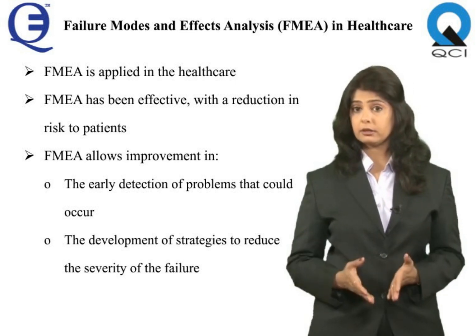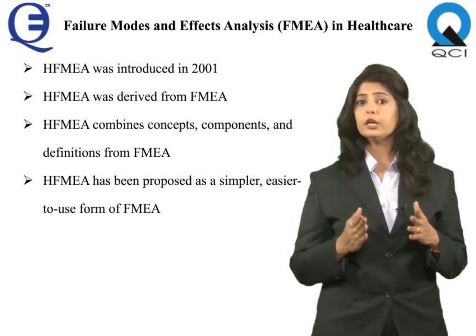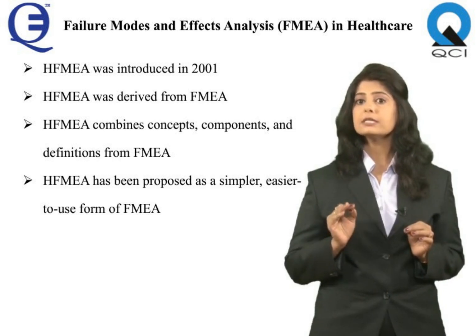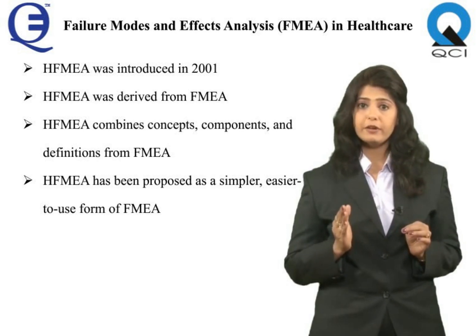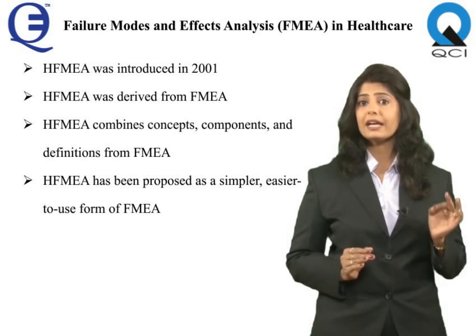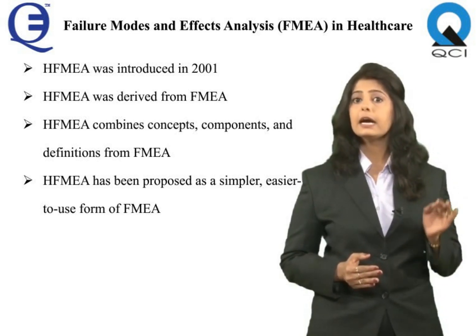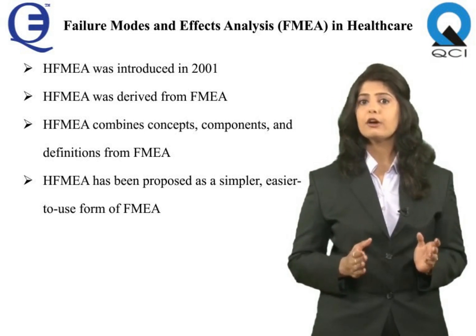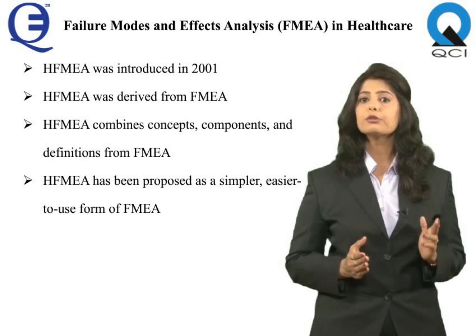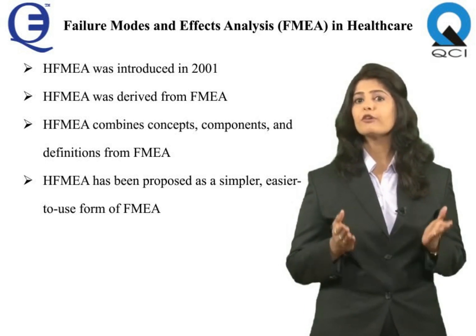FMEA allows improvement in: (a) the early detection of problems that could occur, and (b) the development of strategies to reduce the severity of failure. The modification of traditional FMEA known as Healthcare Failure Mode and Effect Analysis (HFMEA) was introduced in 2001 by the US Department of Veterans Affairs National Center for Patient Safety, and has been proposed as a simpler, easier-to-use form of FMEA.